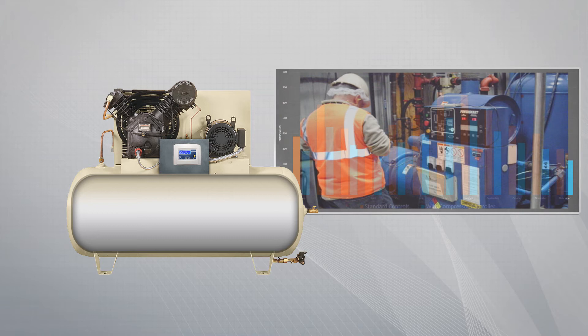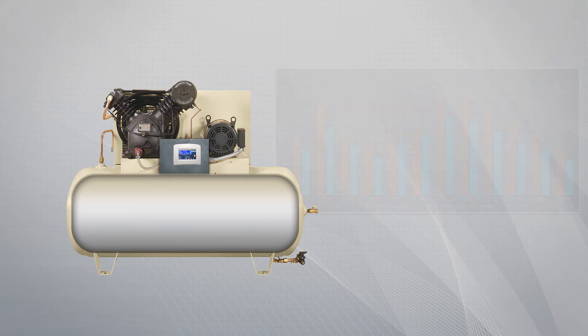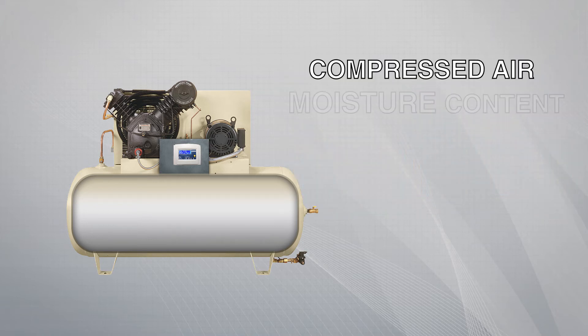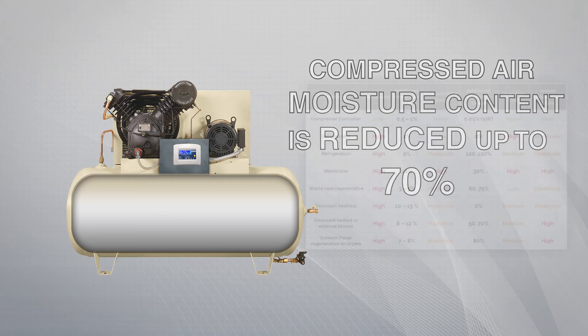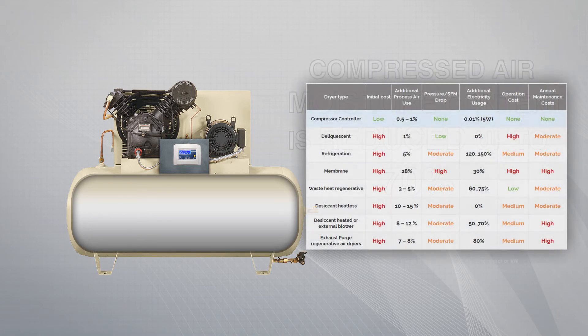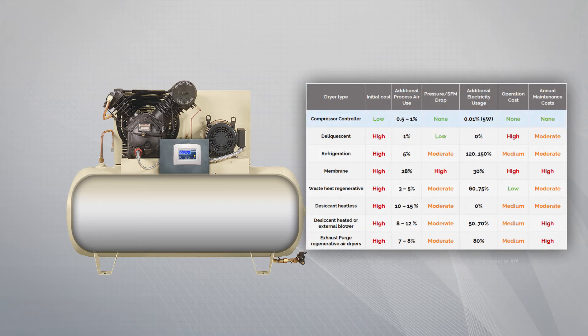Most importantly, with this approach, compressed air moisture content is reduced up to 70% without the use of additional dryers or conditioners. In operations where dry lines are critical and desiccant or other dryers are installed, the compressor controller provides a much less expensive way to dehumidify the air and reduce the energy and maintenance costs of compressed air operation.